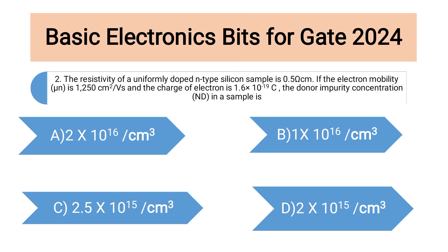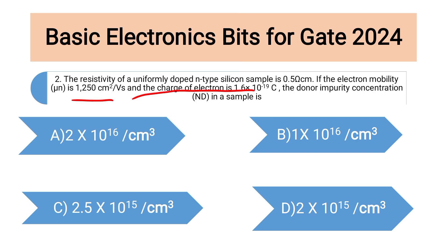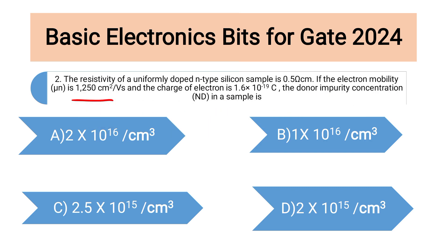Now coming to the next question. The resistivity of a uniformly doped N-type silicon sample is 0.5 ohm-centimeter. If the electron mobility is 1250 centimeter squared per volt-second and the charge of electron is 1.6×10^-19 coulombs, find the donor impurity concentration ND in the sample. In this question they have given resistivity, electron mobility, and electron charge.